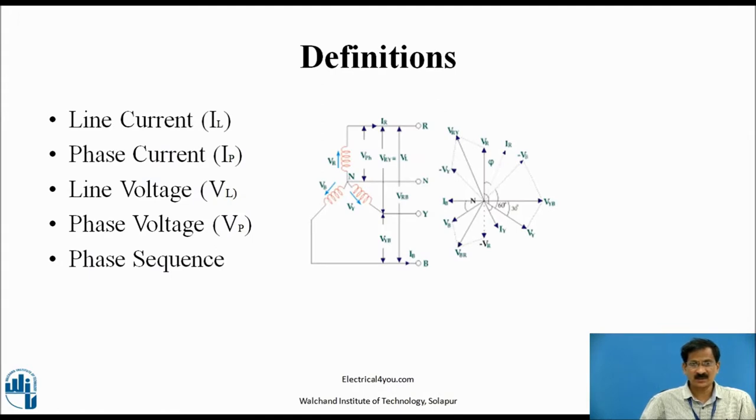Definitions. Line current (IL): It is the current flowing between the two lines. Phase current (Iph): It is the current flowing to a particular phase. Line voltage (VL): It is the voltage between two lines. Phase voltage (Vph): It is the voltage across individual phase. Phase sequence: The order in which all these three voltages attain their maximum values. Generally, the phase sequence is R, Y, and then B.